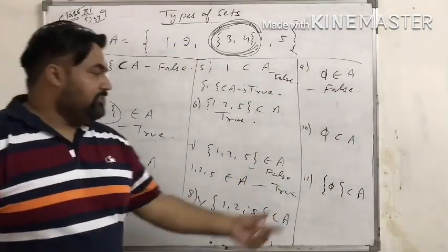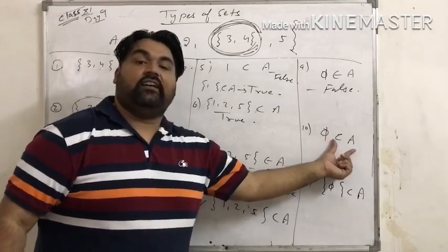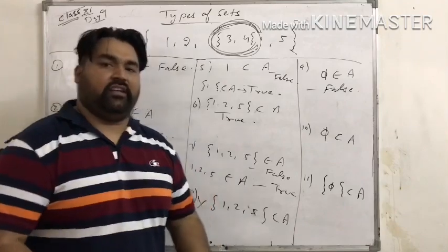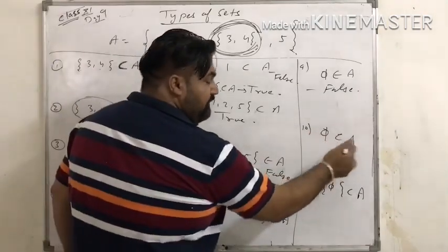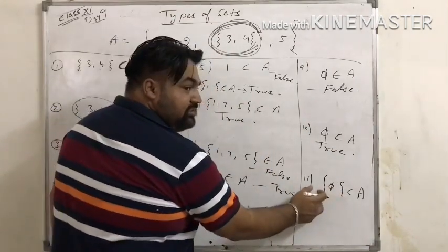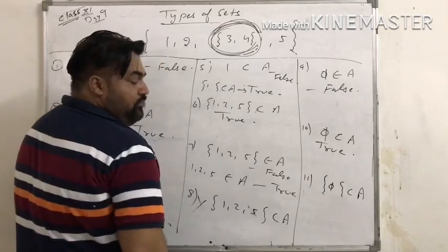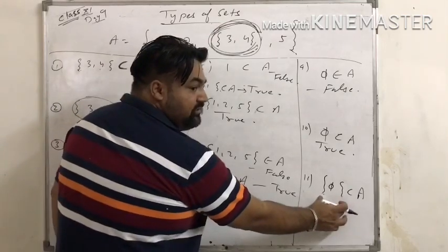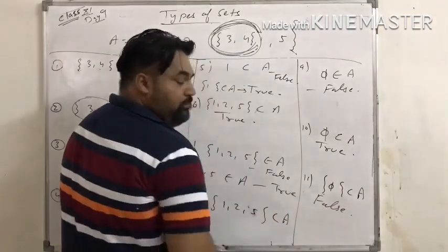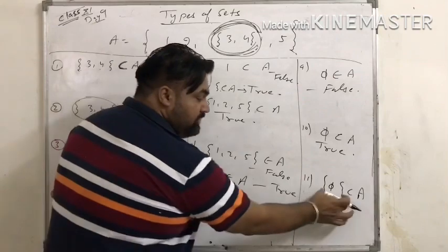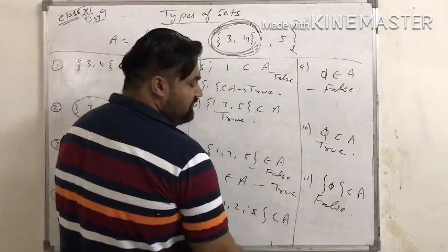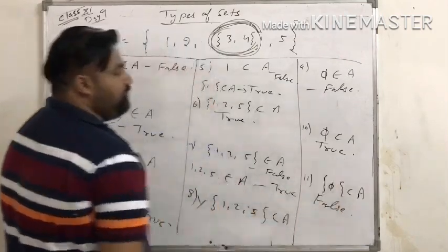Now, ∅ (empty set) does not belong to any set using the ∈ sign — this is false. But as we studied earlier, the empty set ∅ is a subset of every set, whether it is set A, B, or C. So ∅ ⊆ A is true. However, {∅} — curly braces around the empty set — we don't use this; a simple ∅ is the empty set. So {∅} ≠ ∅, which makes the statement false.